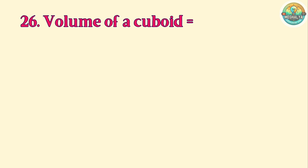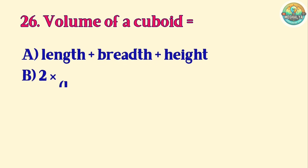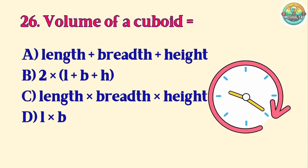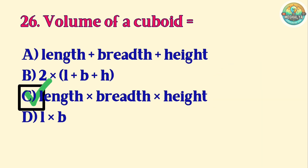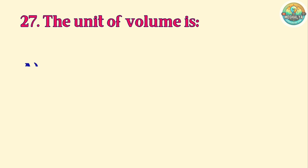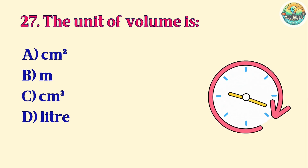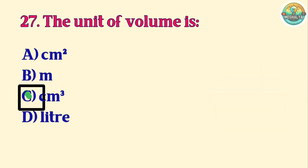Question 26. Volume of a cuboid equals: A. Length plus breadth plus height. B. 2 times L plus B plus H. C. Length times breadth times height. D. L times B. Correct answer is C. Length times breadth times height. Question 27. The unit of volume is: A. Square centimeter. B. Meter. C. Cubic centimeter. D. Liter. Correct answer is C. Cubic centimeter.